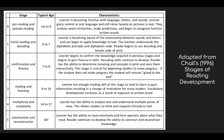The reader begins to use decoding and can break the code of print. Stage two, the confirmation and fluency stage, is when the learner begins to confirm the knowledge acquired in previous stages and begins to gain fluency and skills. Decoding skills continue to develop. The reader has the ability to determine meaning and concepts in print and uses them interactively. Stage three, the reading and learning stage, is when the learner has enough reading skill to gain new information, often resulting in a change of motivation for many readers. Vocabulary development increases as a result of exposure to written word. Stage four, the multiplicity and complexity stage, is when the learner has the ability to analyze text and understand multiple points of view.